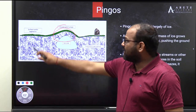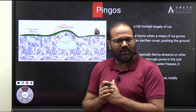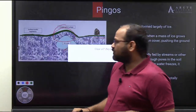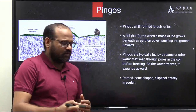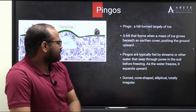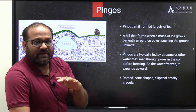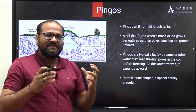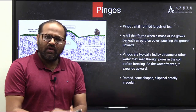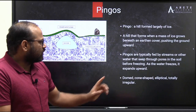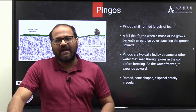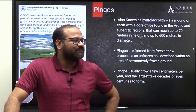So in permafrost areas, if a hill formation is suddenly happening in a flat area, that hill formation is because of this expanding ice core — that is a pingo. Pingos are typically fed by streams or other water that seep through the pores in the soil before freezing. Once freezing starts, ice formation happens and it expands upward. They can be dome-shaped, cone-shaped, elliptical, or totally irregular — there is no specific shape.